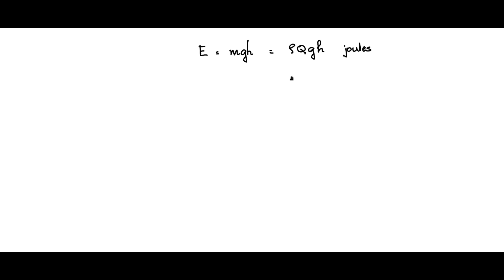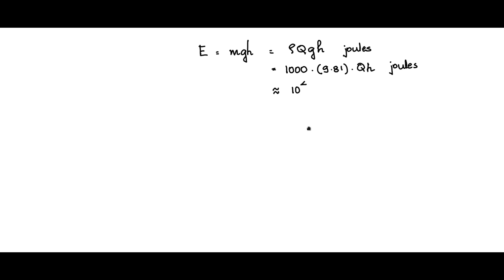For water, rho is 1000 kg per cubic meter. Q is a variable, g is 9.81 m/s², and q and h are variables — this is in joules. If you take 9.81 as approximately 10, you can easily remember the formula as 10⁴ × q × h joules, where q is in cubic meters and h is in meters.